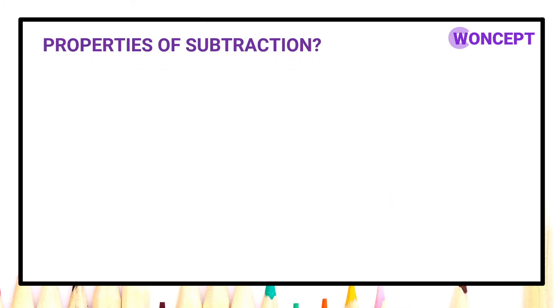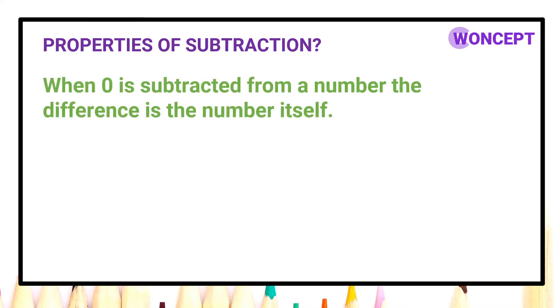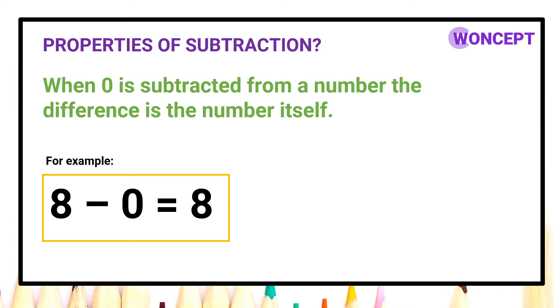Now let us understand properties of subtraction. What is the first property of subtraction? When 0 is subtracted from a number, the difference is the number itself. For example: 8 minus 0 is equal to 8. As you can see, here 0 is subtracted from 8 and the difference is number itself. That means 8 itself.